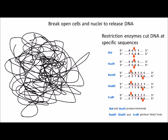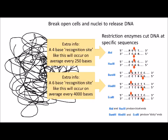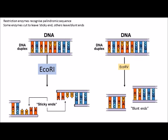If you break open a million cells and isolate the DNA from those, each cell's DNA will be cut in exactly the same places. A 4-base recognition site cuts roughly every 250 bases, and a 6-base recognition site cuts roughly every 4,000 bases. The DNA that is cut can have sticky ends or blunt ends.